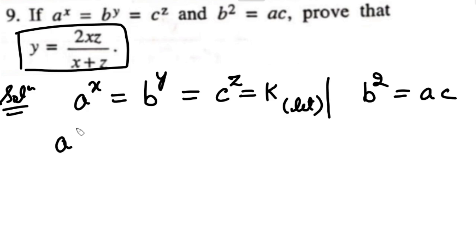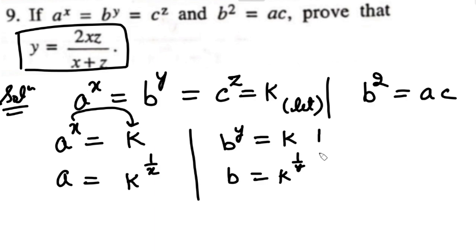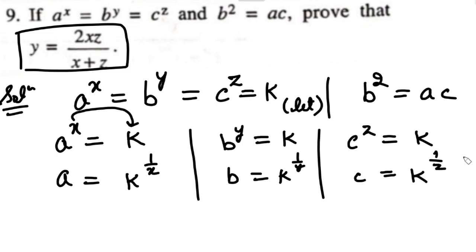If A raised to the power X equals K, then A equals K raised to the power 1 upon X (shifting the power). Similarly, B raised to the power Y equals K means B equals K raised to the power 1 upon Y. And C raised to the power Z equals K means C equals K raised to the power 1 upon Z.